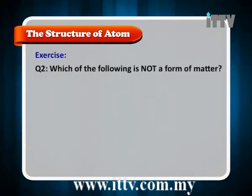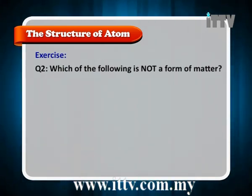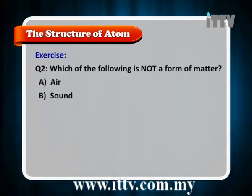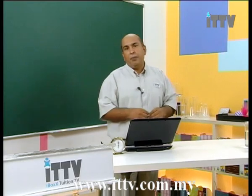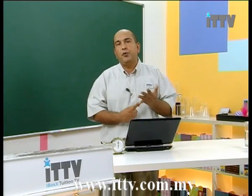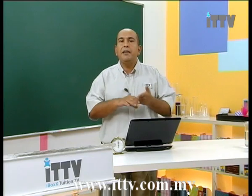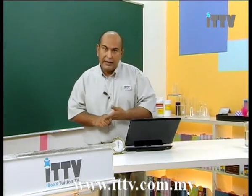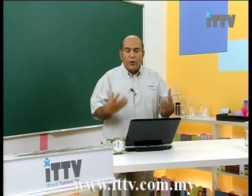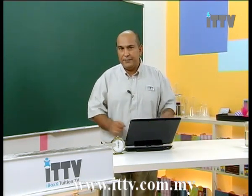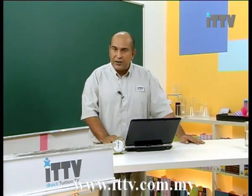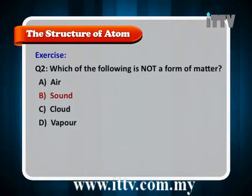Question 2: Which of the following is not a form of matter? A, air. B, sound. C, cloud. D, vapor. Apply the basic idea — matter must occupy space, must have a volume, and must have a mass. It needs to be a solid, liquid, or gas. The answer is B, sound.